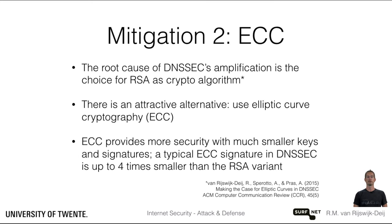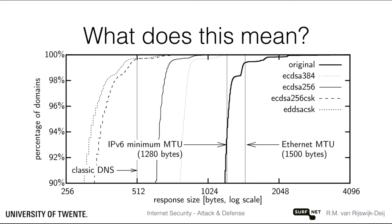ECC algorithms can yield much smaller signatures, yet from a cryptographic strength point of view, these are much more secure than RSA signatures. So, what would it mean for DNSSEC if we switched from using the RSA signature algorithm to an elliptic curve algorithm?